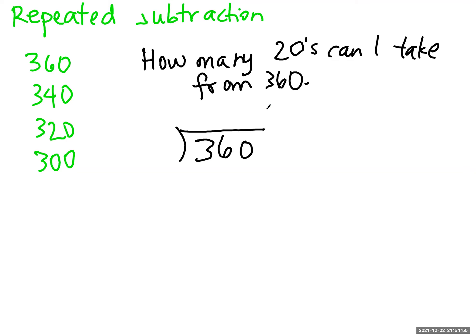So my dividend goes inside the division bracket and the divisor goes on the outside. I'm going to make a really long line here. I'm going to keep track of my partial quotients on the side.